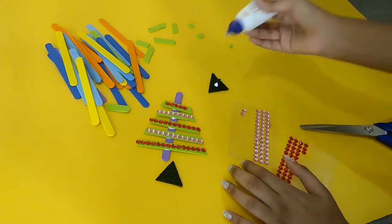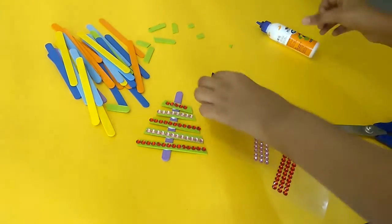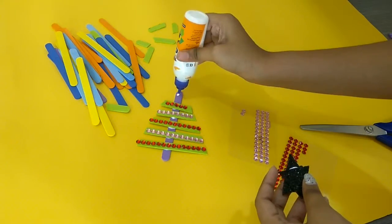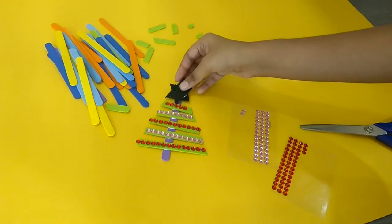After doing that, take two triangles and glue them as it is shown and put it on the popsicle.